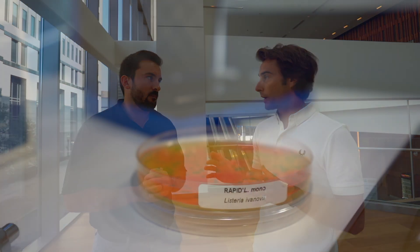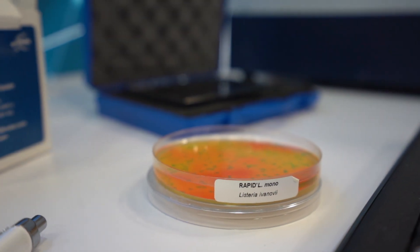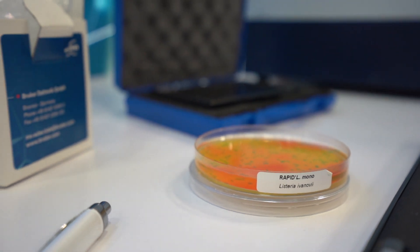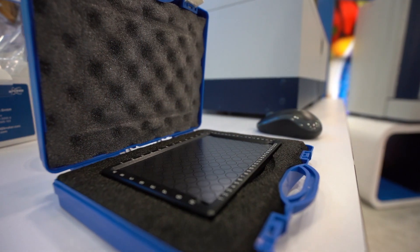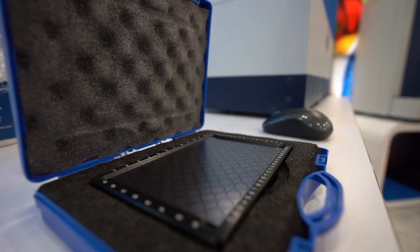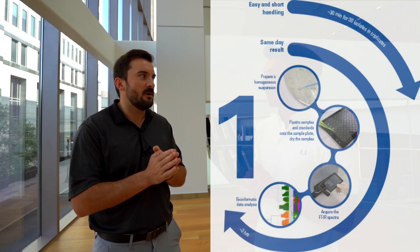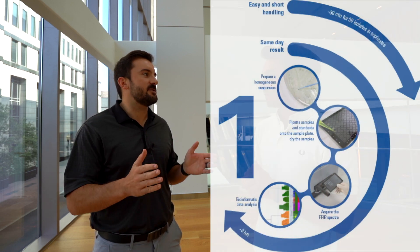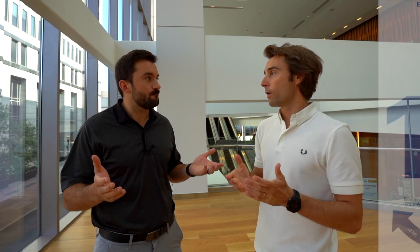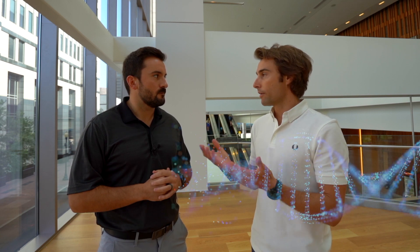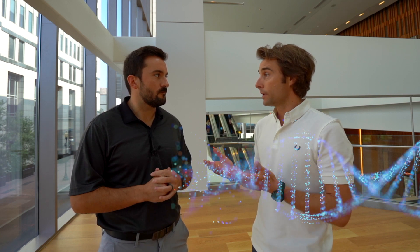Is it as easy as the MALDI biotyper? It's always the same thing with the target — you take an isolate, same thing, applying it directly to the target plate, and then running it through the IR. In terms of strain typing, it's not as fast as the MALDI biotyper, but we're still strain typing within three hours.